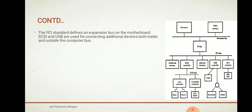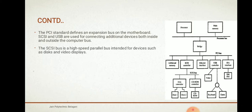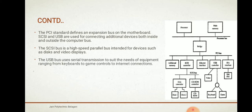SCSI and USB are used for connecting additional devices both inside and outside the computer. At the SCSI controller there is a SCSI bus, which can be used to connect a disk controller and CD-ROM controller. The SCSI bus is a high-speed parallel bus intended for devices such as disk drives, scanners, and displays.